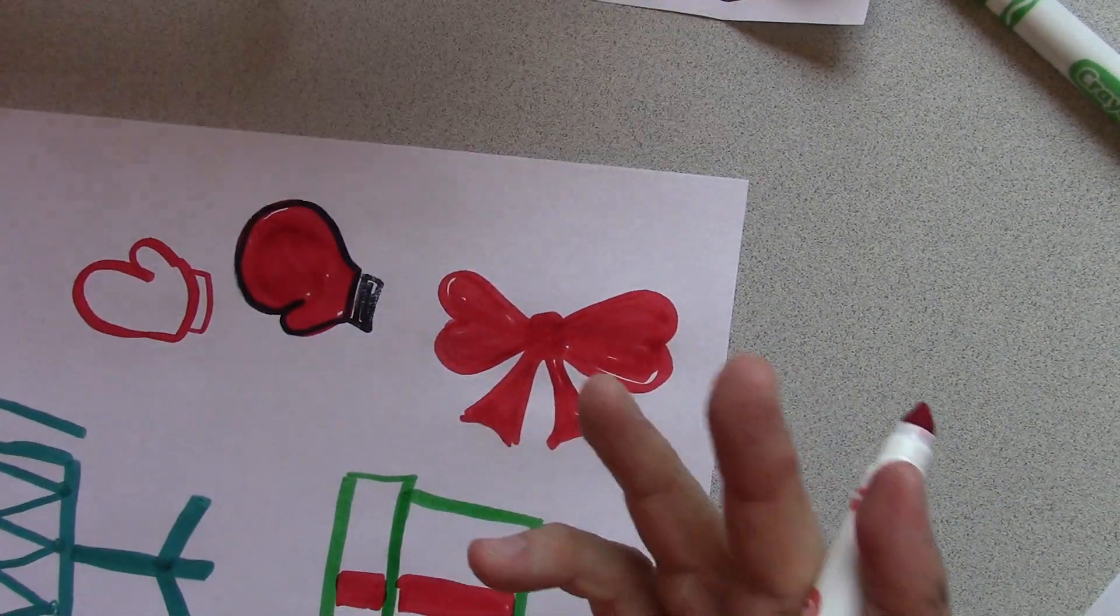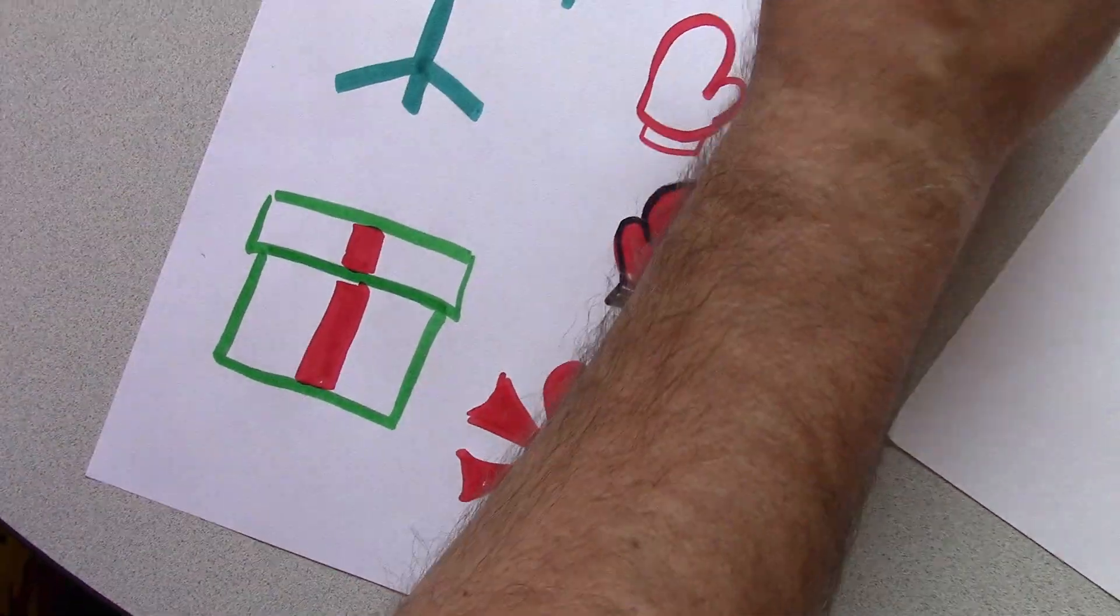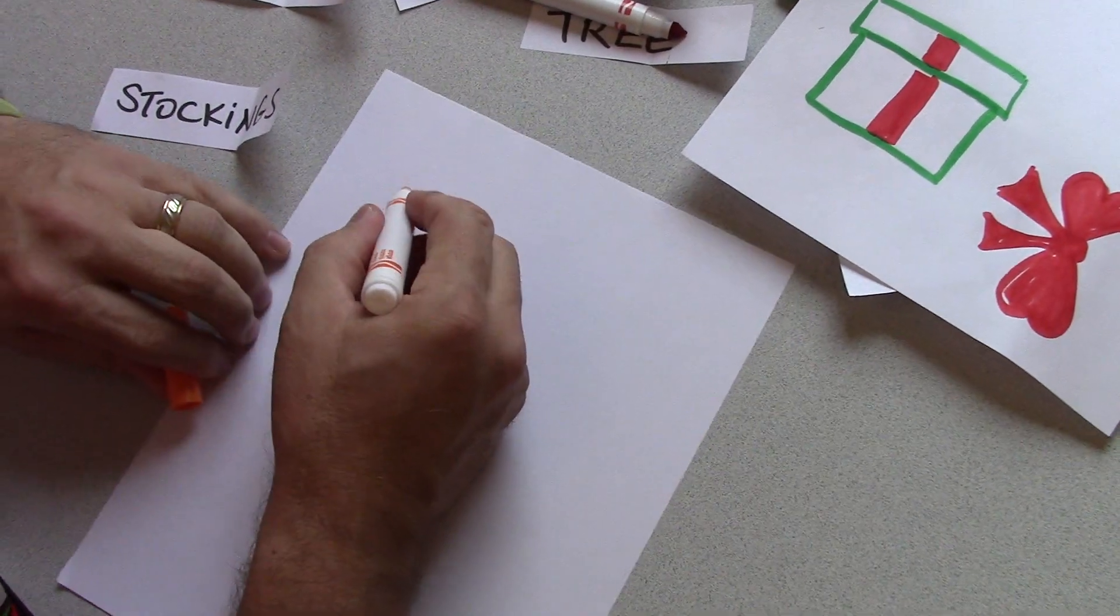But do you see how I started with a basic shape? Then you can go, of course, you want to bring that out. You do it in black. Oh, Santa hat and stockings. Stockings. Let's draw. I'm going to set this over here for a second. Let's do a different color. Let's get some orange out here. Stockings.